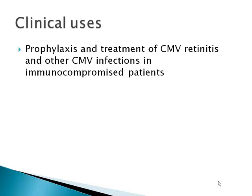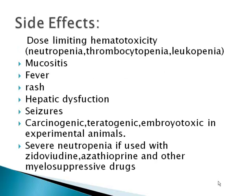Ganciclovir is used as prophylaxis and treatment of CMV retinitis and other CMV infections in immunocompromised patients. Although it can be used in herpes 1 and 2, it is not used because of its very bad side effect profile. It causes dose-limiting hematotoxicity, including neutropenia, thrombocytopenia, and leukopenia. It causes fever, mucositis, rash, hepatic dysfunction, and seizures. In experimental animals, it is thought to be carcinogenic, teratogenic, and embryotoxic. It causes severe neutropenia when used with drugs like zidovudine, azathioprine, and other myelosuppressive drugs.